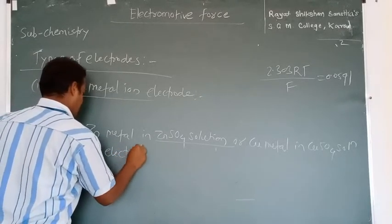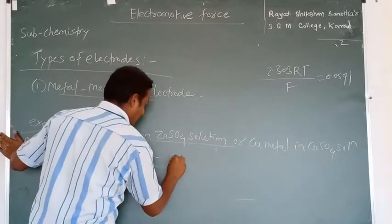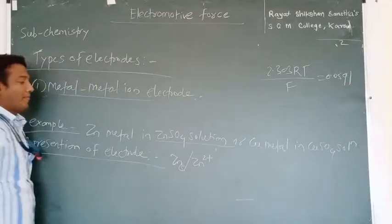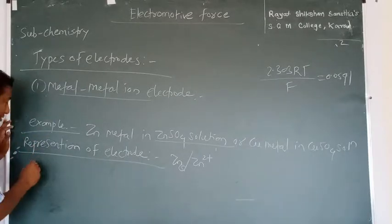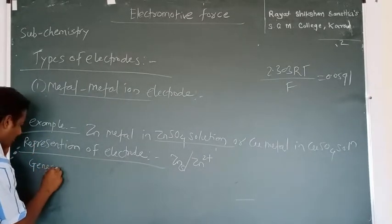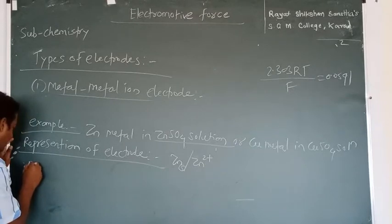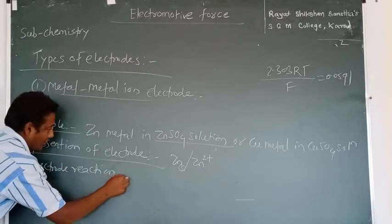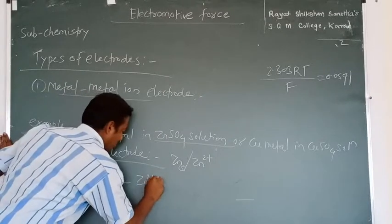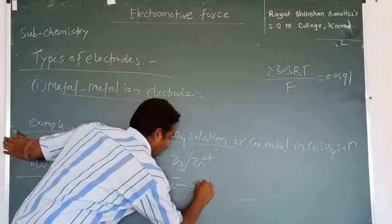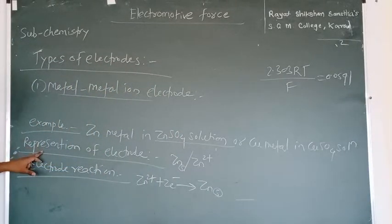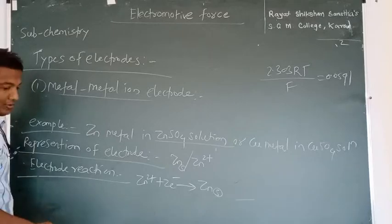The representation of the zinc electrode is written as: Zn | Zn²⁺. The electrode reaction is: Zn²⁺ + 2e⁻ → Zn (pure metal). This is the representation of the electrode and the electrode reaction.